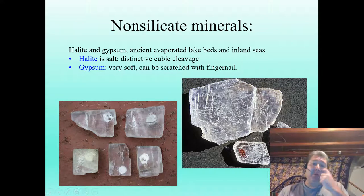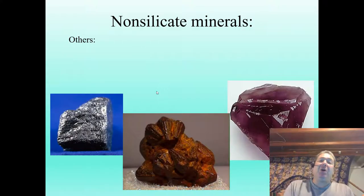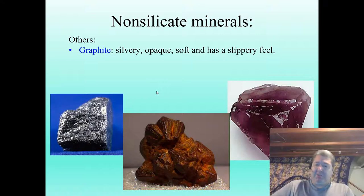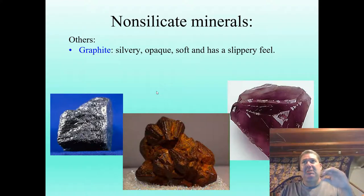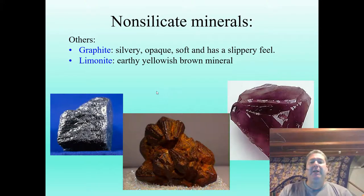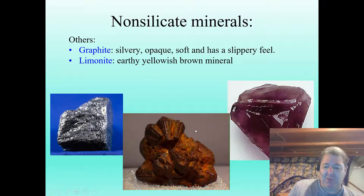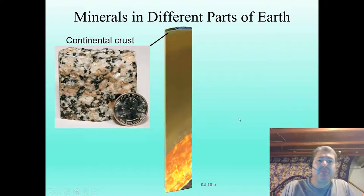Some other non-silicate minerals that are fun: graphite is the stuff used in your pencil. Its chemical formula is C — carbon — the same as diamond. Diamond is just formed deeper in the earth and has a different crystal structure, making it much more pressure-resistant. We also have limonite, an earthy yellow-brown mineral essentially a rust mineral. Then there's fluorite — a beautiful mineral with four directions of cleavage; you can see triangles reflected all through it. If you see little triangles, think four directions of cleavage.